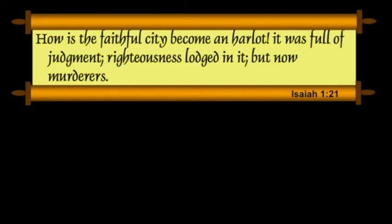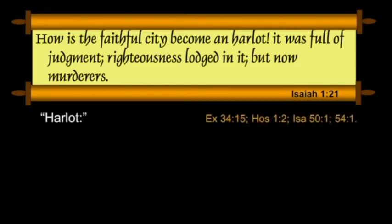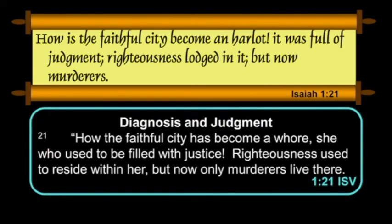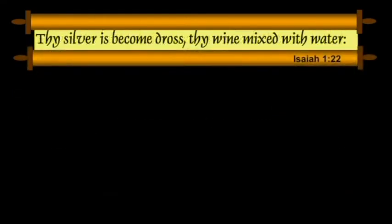Verse 21 in King James: "How is the faithful city become a harlot? It was full of judgment. Righteousness lodged in it, but now murderers." How much it's fallen. The word harlot is a strong term, used this way not only here but throughout Hosea and other places. The ISV: "How the faithful city has become a whore. She used to be filled with justice. Righteousness used to reside within her, but now only murderers live there."